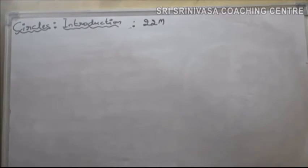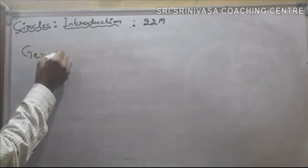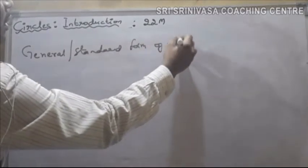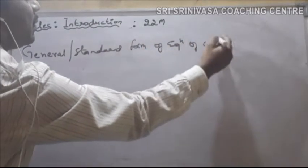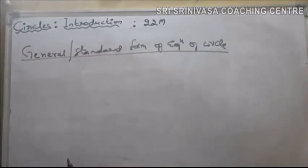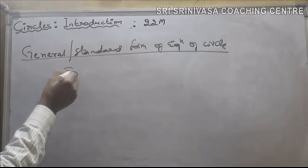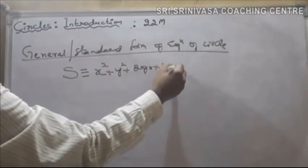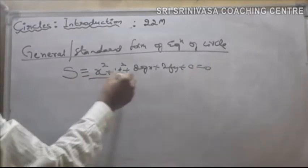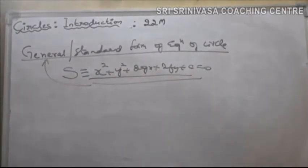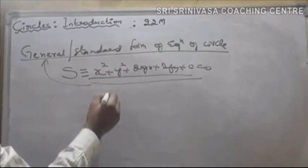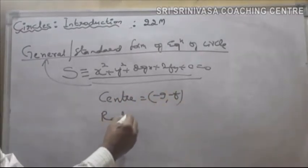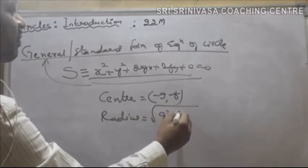Now let us go to the general or standard form of the equation of a circle. The general formula of the circle is denoted by S, and it is: x square plus y square plus 2gx plus 2fy plus c equal to 0. For this circle, the center will be (minus g, minus f) and the radius will be the square root of g square plus f square minus c.